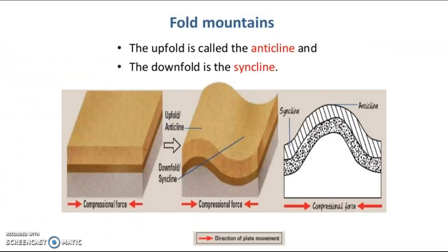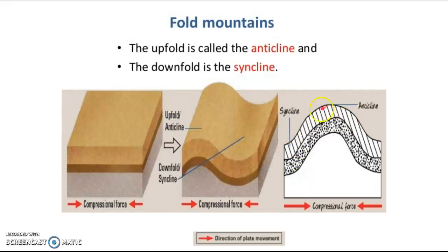When a rock is compressed and folded, you end up with something called a syncline and an anticline. The syncline is the downward fold; the anticline is the upward fold — and those are two vocab words. Draw this diagram into your notebook and label syncline and anticline so you can see the difference between the two.